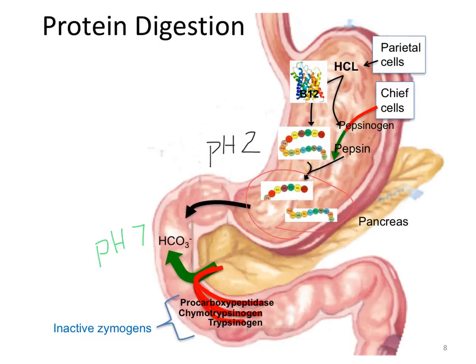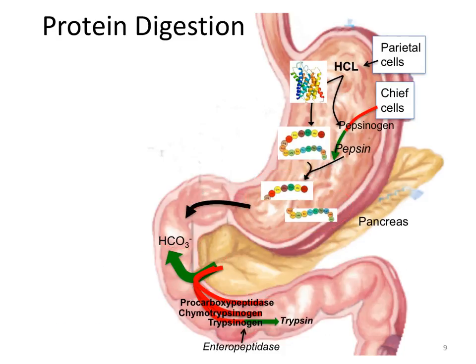These polypeptides move to the small intestine where the pH has been neutralized by bicarbonate secreted from the pancreas. The pancreas also secretes several inactive zymogens of proteases. The inactivating peptide of trypsinogen is cleaved by enteropeptidase, which activates trypsinogen to become the active protease trypsin. Enteropeptidase is an enzyme on the luminal surface of intestinal enterocytes.